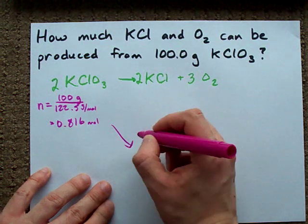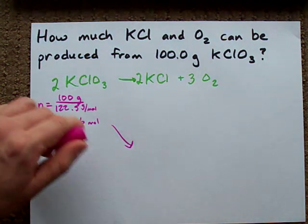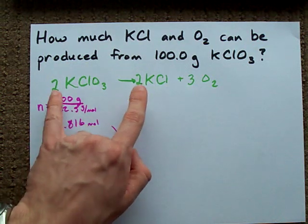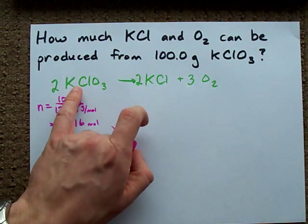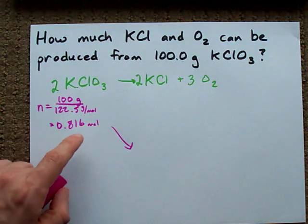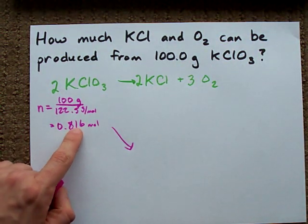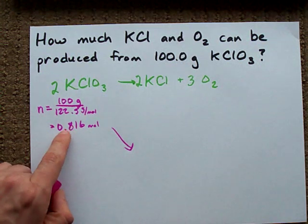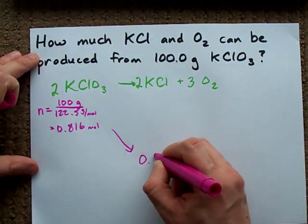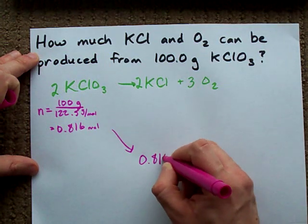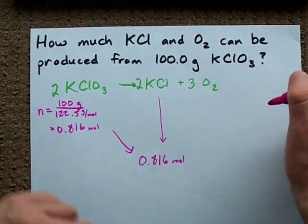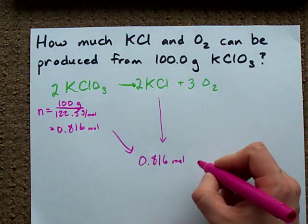Now, it's going to disappear completely. Two moles of it will react to give two moles of this. So, however many of these we get rid of, we make the exact same number of these. If we react 0.816 moles of these, we're going to end up with 0.816 moles of potassium chloride as well.